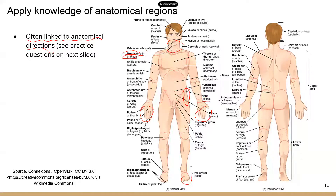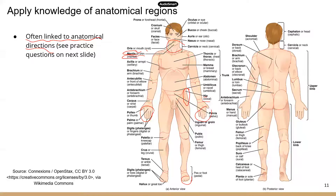These anatomical regions are often linked to anatomical directions in questions. Anatomical directions include superior, inferior, anterior, posterior, proximal, and distal. If you don't know what those terms mean, definitely check out my video on anatomical directions and terminology, or check out a free human anatomy and physiology textbook and go through all those terms and know what they mean.